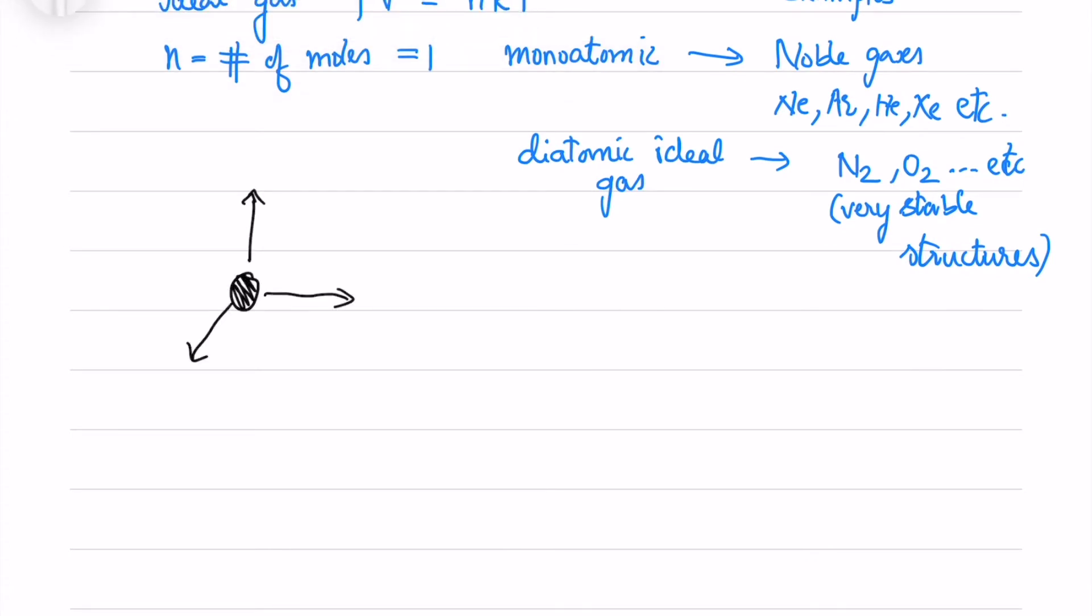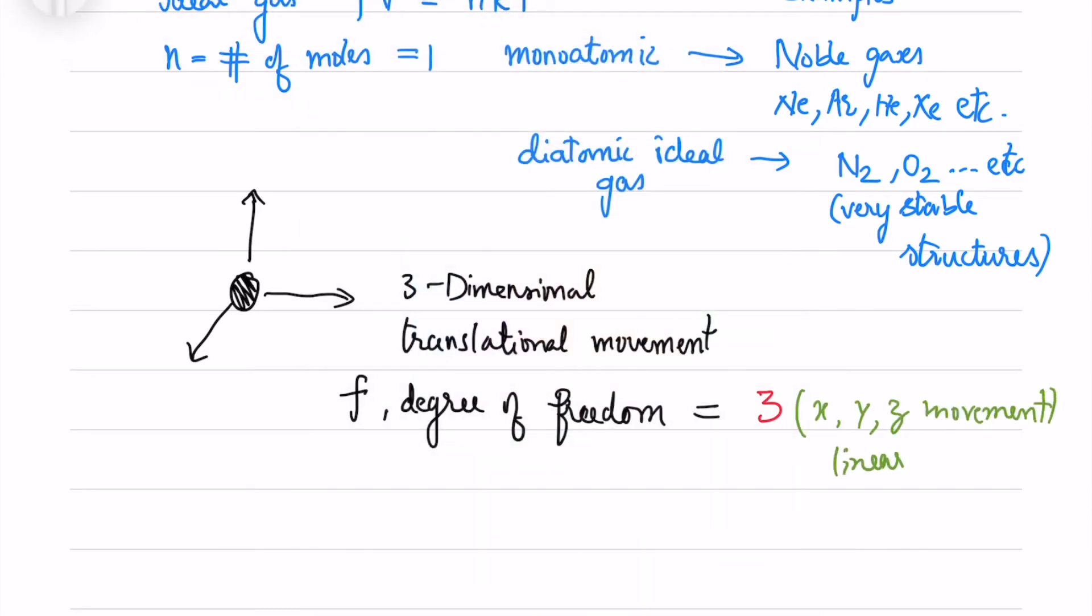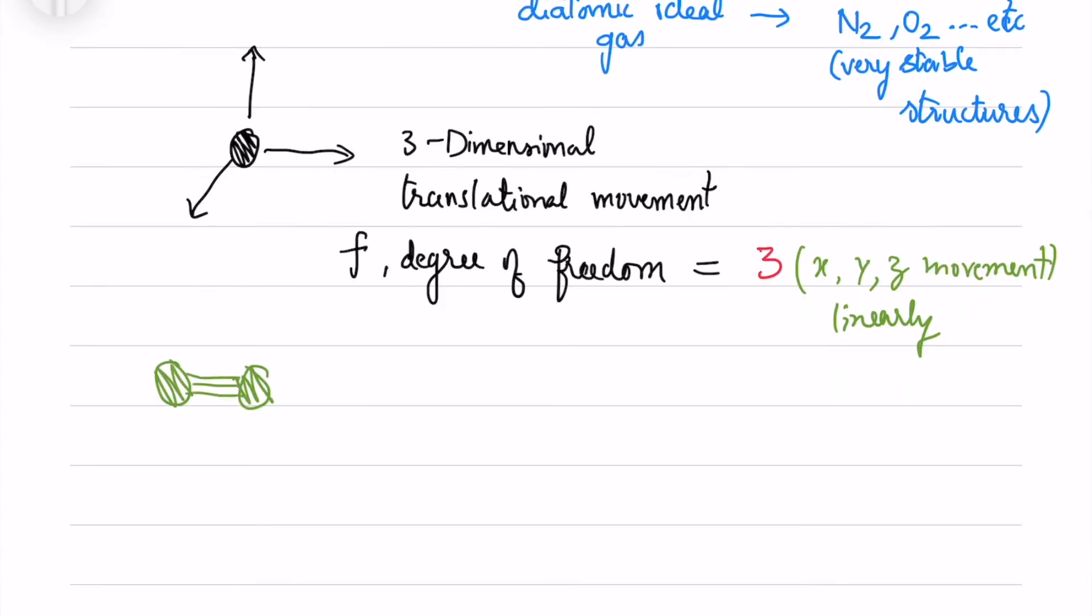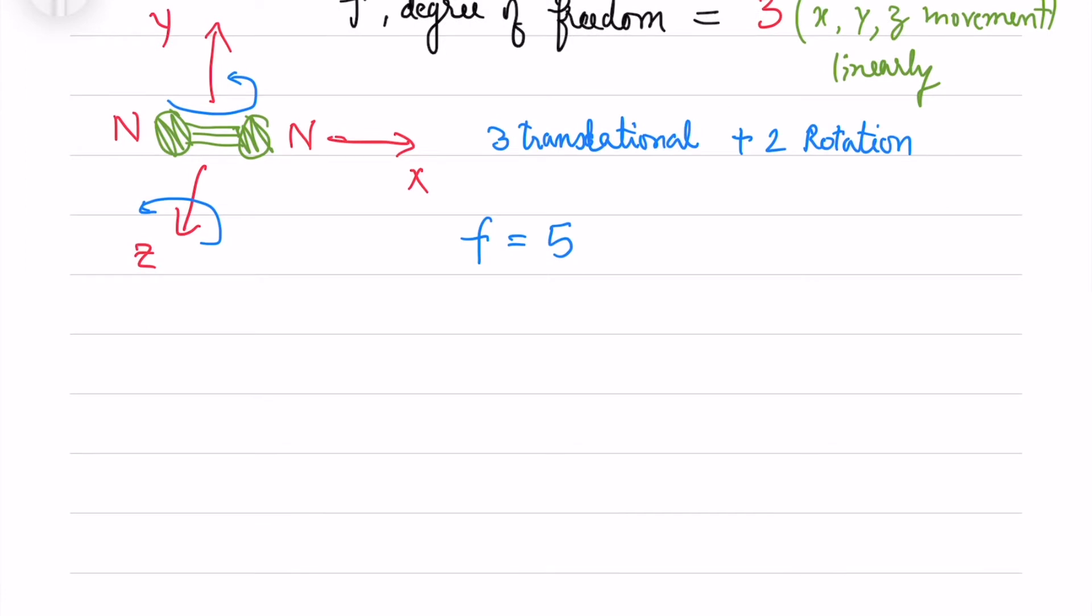Now if you take a monoatomic gas it goes three-dimensionally in XYZ directions so it has a linear translational movement. So now we define the degrees of freedom. For monoatomic gas it's three, XYZ movement linearly. Now if you take a diatomic gas like Nitrogen and if you take XYZ we have three translation movements and then along the Y and Z we have rotations. If we rotate in X we don't get any rotations as such. So we have three translational plus two rotations of freedom. So the degree of freedom is 5 for diatomic ideal gas.